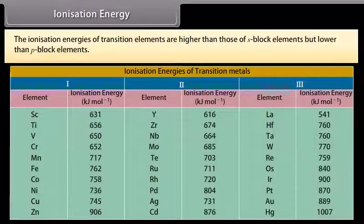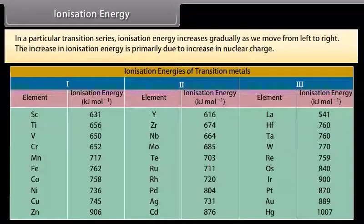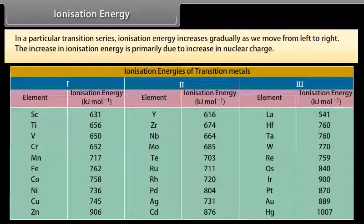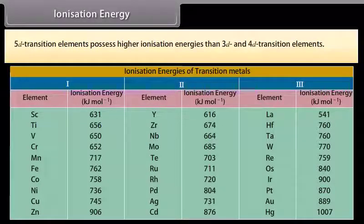The ionization energies of transition elements are higher than those of S-block elements but lower than P-block elements. In a particular transition series, ionization energy increases gradually as we move from left to right, primarily due to increase in nuclear charge. The 5D transition elements possess higher ionization energies than 3D and 4D transition elements, due to the greater effective nuclear charge because of the ineffective shielding of the nucleus by 4F electrons.